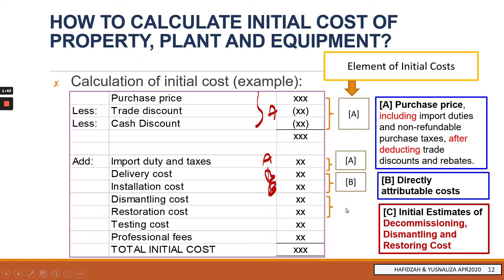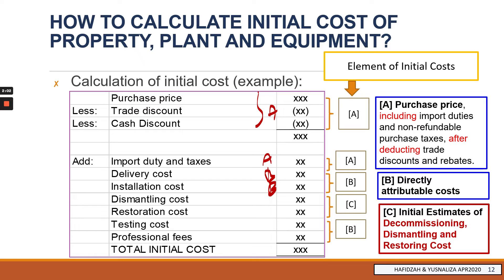The dismantling and restoration cost, which will be incurred in the future, should be included in the initial cost at its present value — that is under initial estimates. This will be covered later on. The last two items — testing and professional fees — are also under element B, which is directly attributable costs.